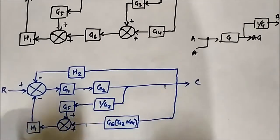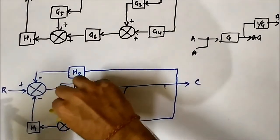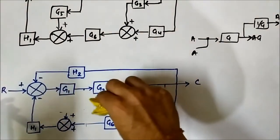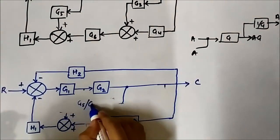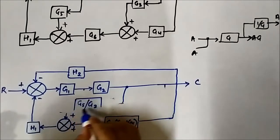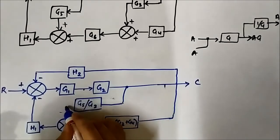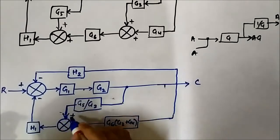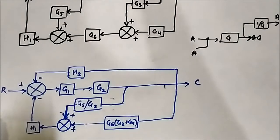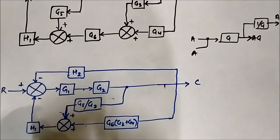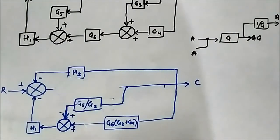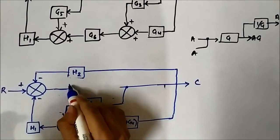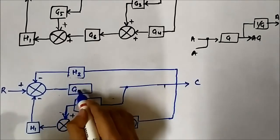1 by G2. Again, G5 and G2 they are in cascade, so it will become G5 by G2. G5 by G2, it will become that. Again, here these two blocks G1 and G2 are in cascade, so they will become G1 G2.